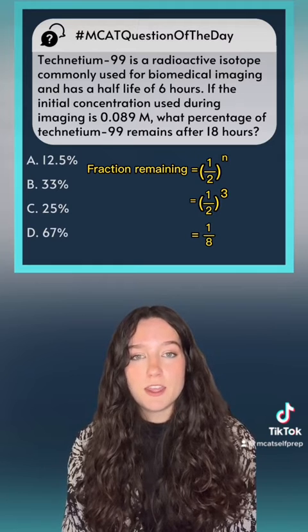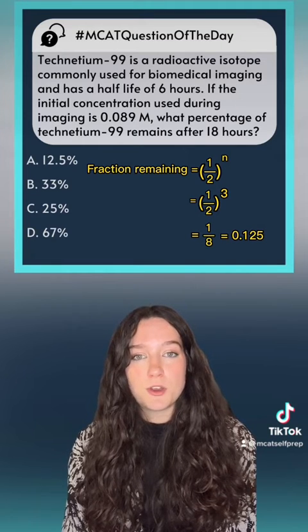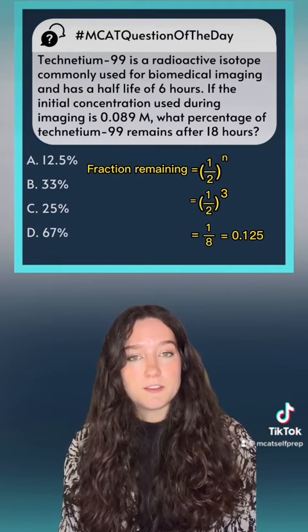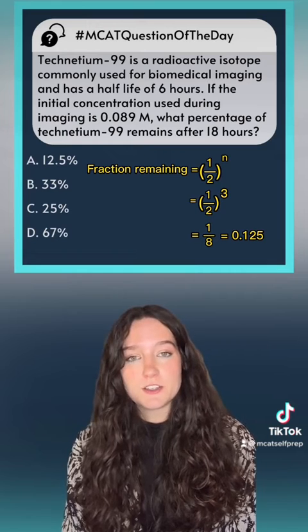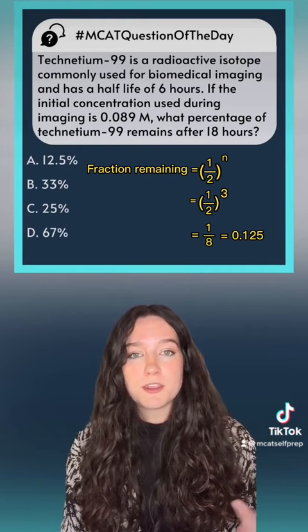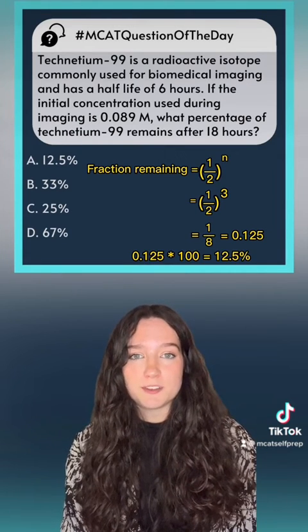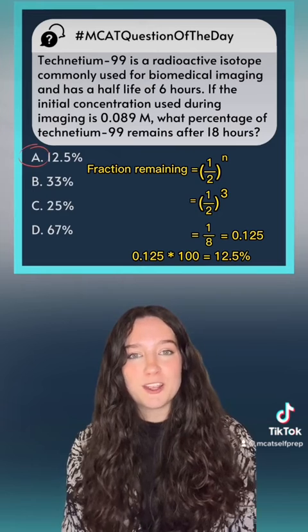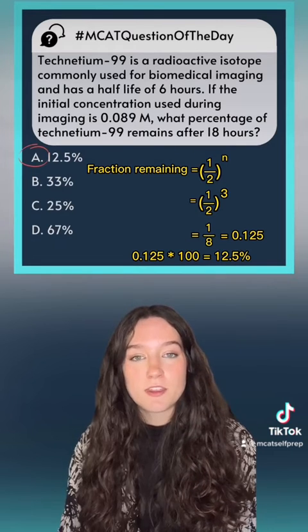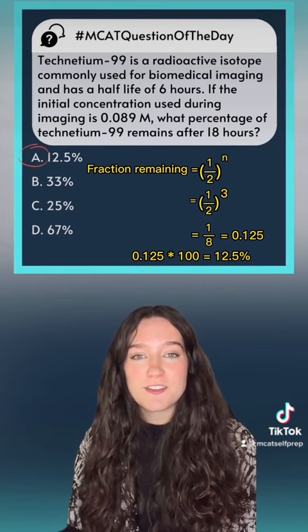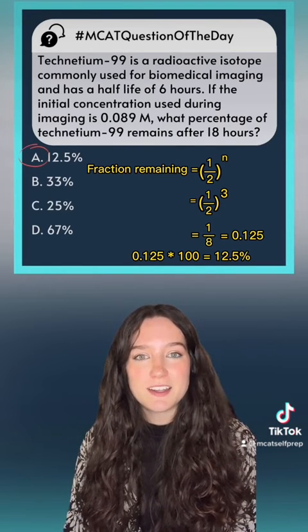1 over 8 equals 0.125, and to figure out the percentage, we multiply that by 100, giving us 12.5 percent, or answer choice A. Thus, after 18 hours, 12.5 percent of the original sample of technetium-99 is still around.